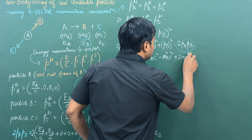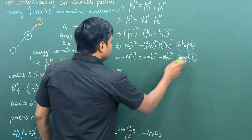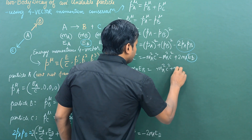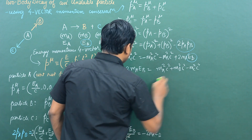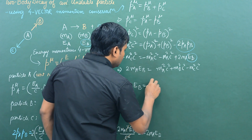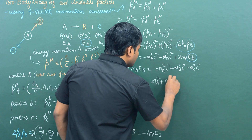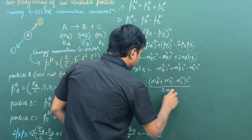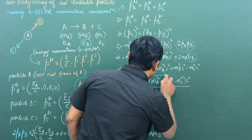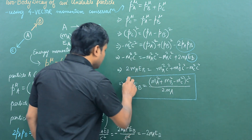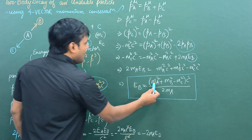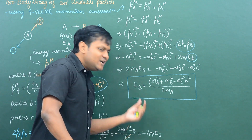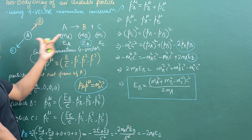Plugging this back in: the minus sign times minus 2·MA·EB becomes plus 2·MA·EB. Since EB is the unknown, we rearrange to get 2·MA·EB = MA²c² + MB²c² − MC²c², and therefore EB = (MA² + MB² − MC²)·c² / (2·MA). This is a key expression for the energy of daughter particle B in terms of the rest masses of all the particles.